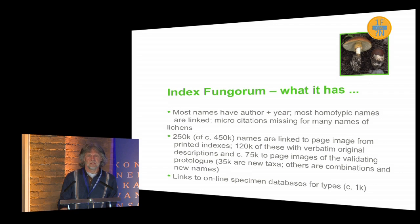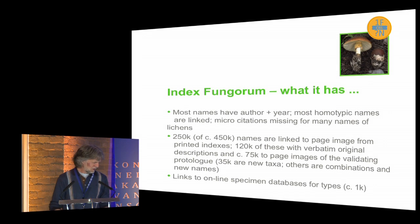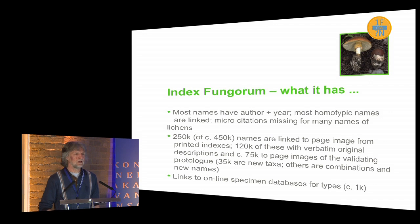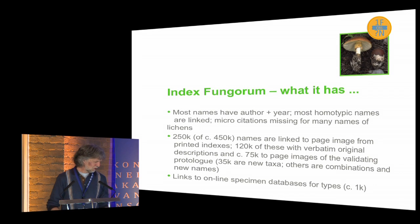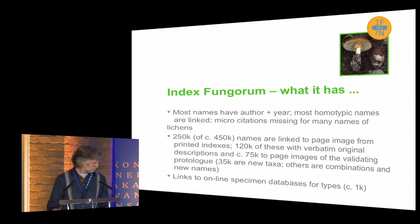Index Fungorum has names of fungi, but the quality of those data is rather variable. Most have an author and a year, and most homotypic names are linked together at all ranks. Micro citations are missing from many names, especially lichen-forming names. The lichenologists have not fully engaged with Index Fungorum — some accept that it exists but won't use it, and therefore introduce homonyms very easily.